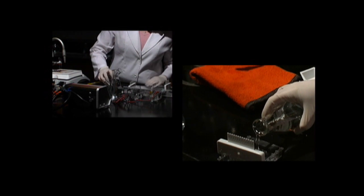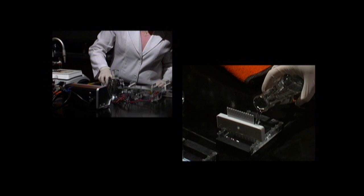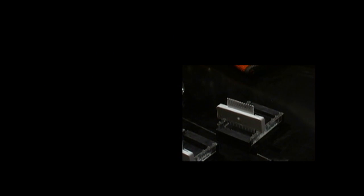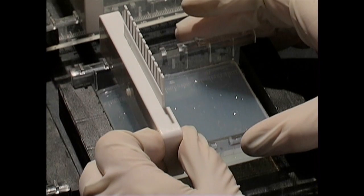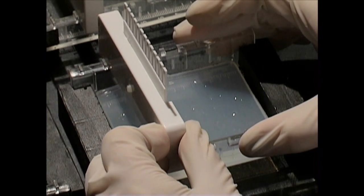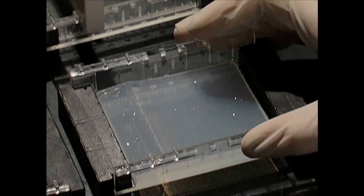Make sure it's on a level surface, and pour the agar solution into it. Allow 20 minutes for it to solidify. It should be firm and cool to the touch. Once the gel is solidified, carefully and slowly remove the rubber dams and comb.